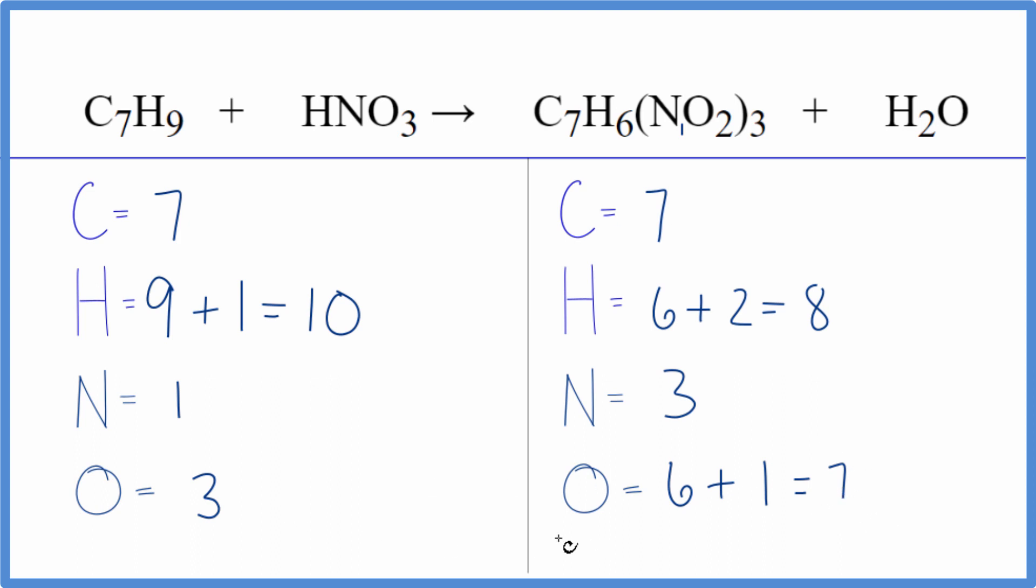I like to leave the oxygens and hydrogens till last. Let's do the nitrogens. If we put a 3 in front of the nitric acid, let's update the hydrogens, nitrogens, and oxygens here. We have the 9 plus the 1 times 3, so 3.